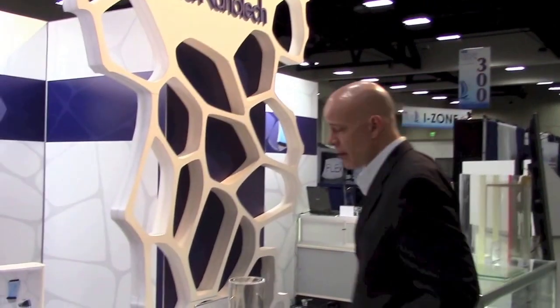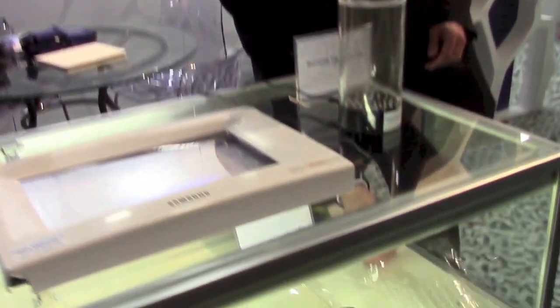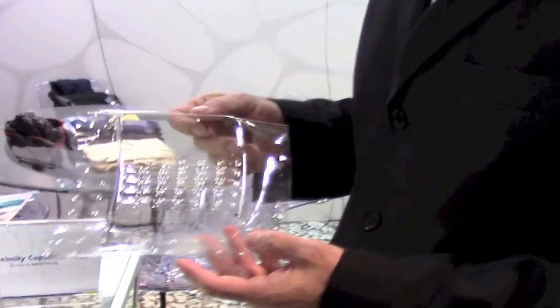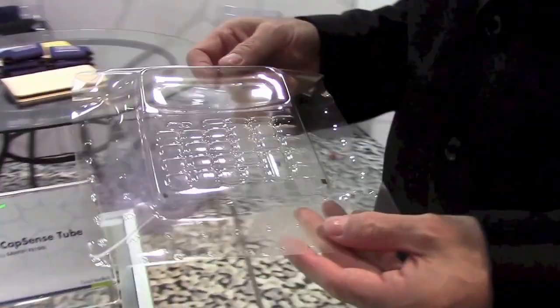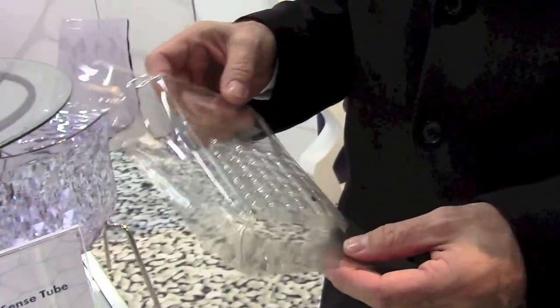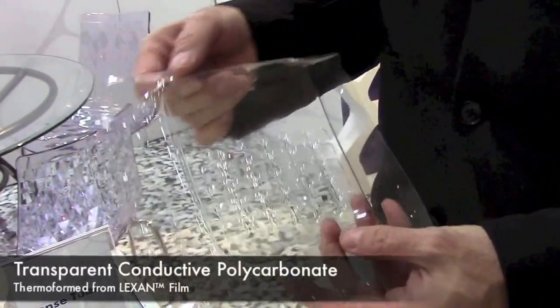Another very exciting, recent thing is that we've partnered with Sabic Corporation, who are now coating our mesh, our Sante mesh, onto polycarbonate substrate. So polycarbonate can be thermal formed, and can be used to create the housing for different products.